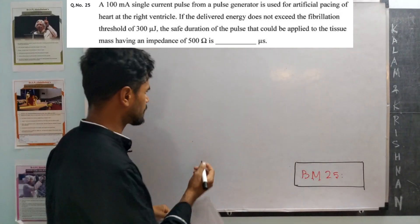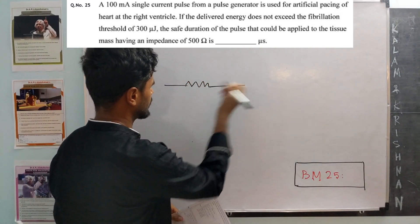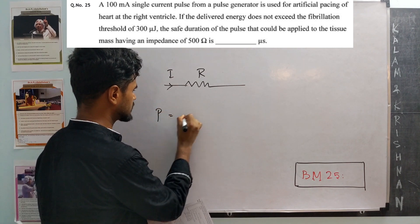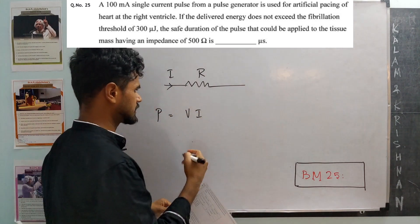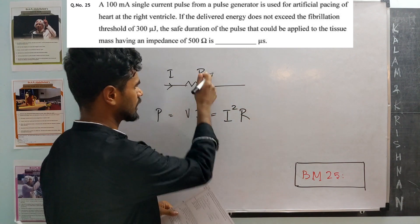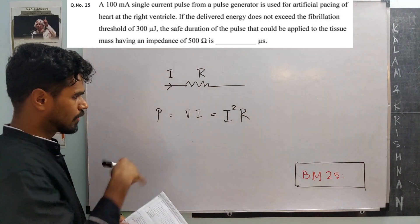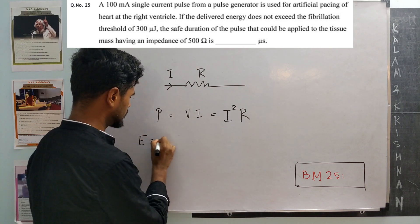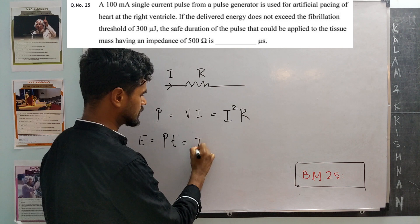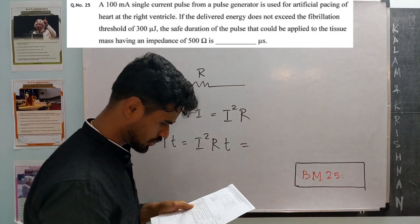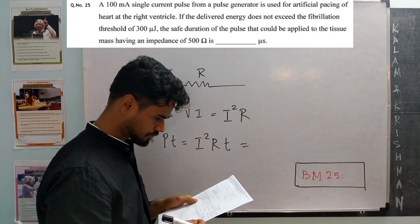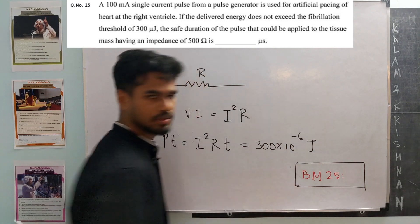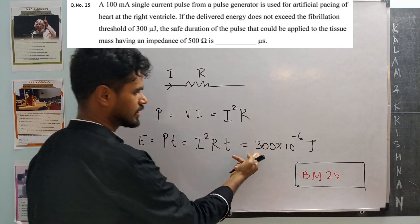Say we have a resistor with a current I flowing and resistance R. The power supplied is V×I, which in this case is I²R because both I and R are given. Now instead of power, we need to limit the energy. Energy is P times T, so this is I²RT, and this should not exceed 300×10⁻⁶ joules.